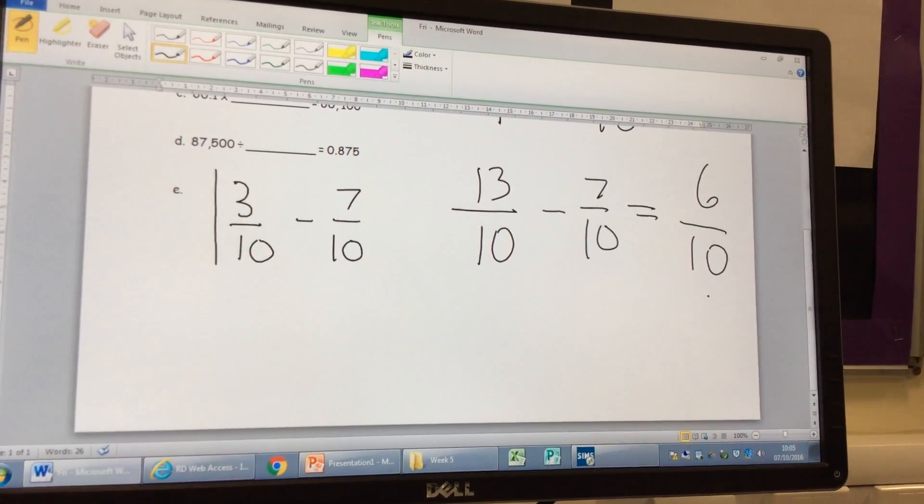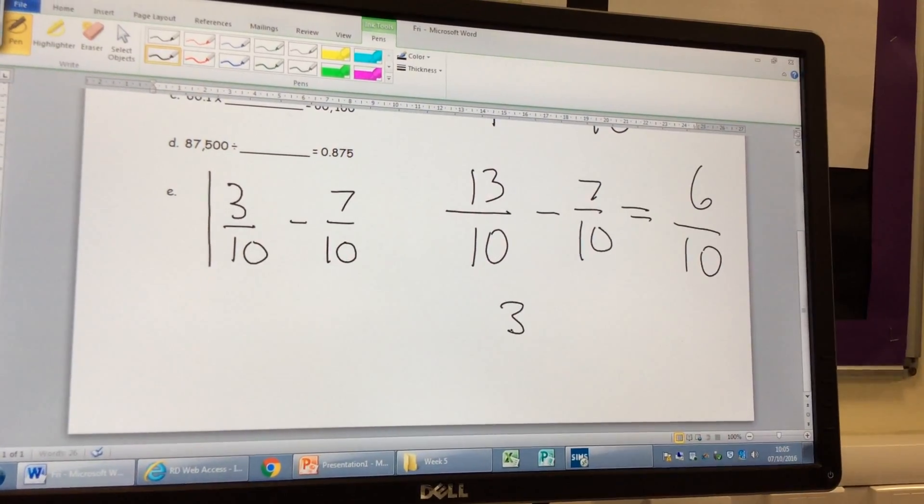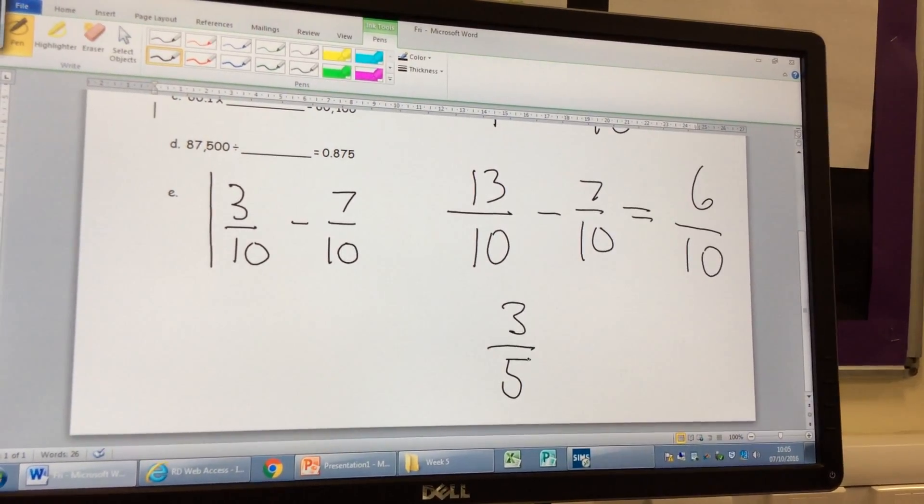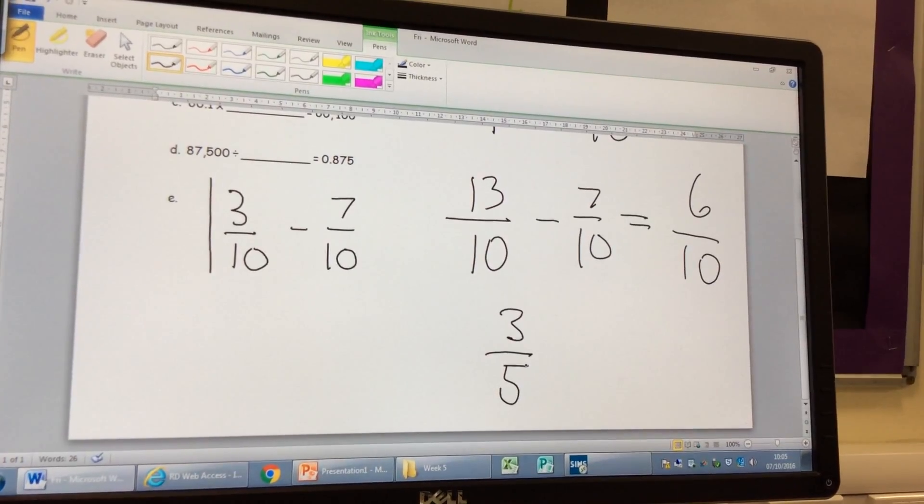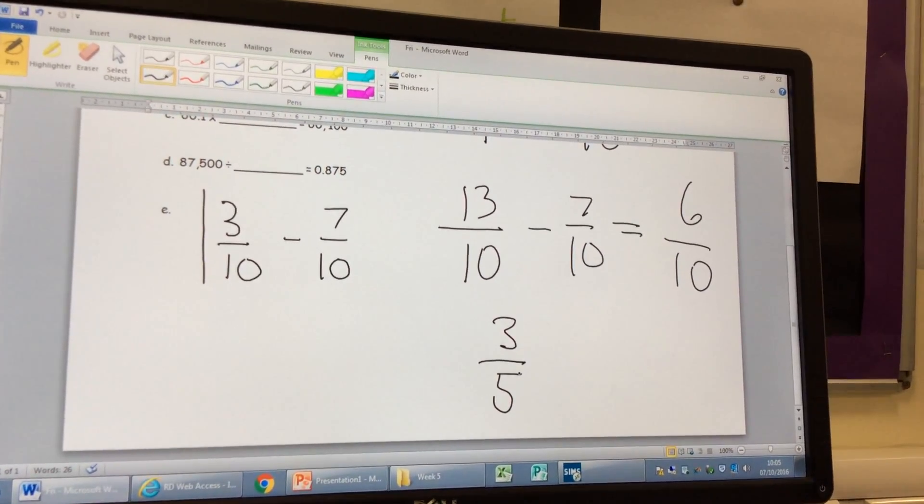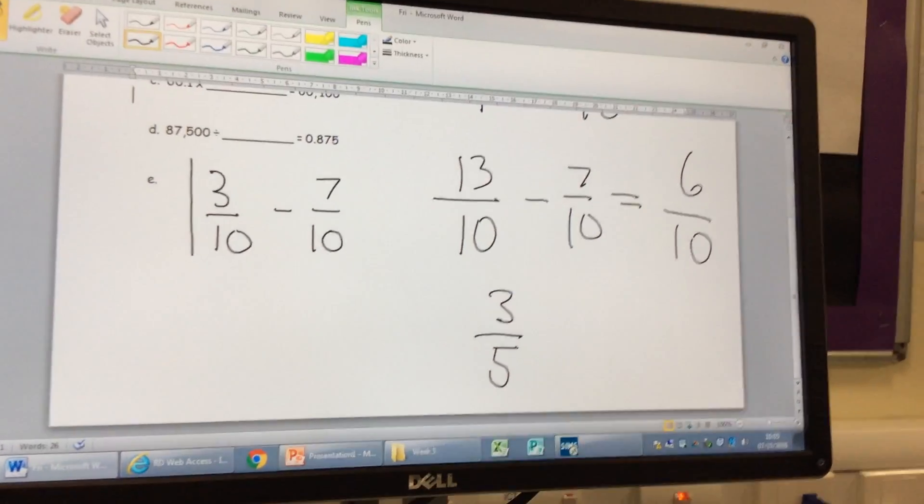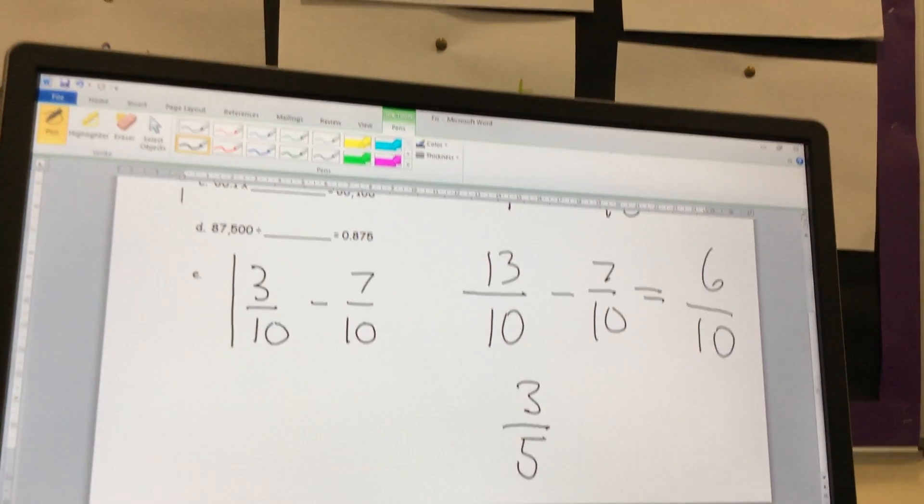You've simplified it. So what have you divided each part by to get to three fifths? And two. Two. Excellent. Well done. Three fifths. Good man. Excellent. Well done. Give yourselves a mark out of five. Thank you.